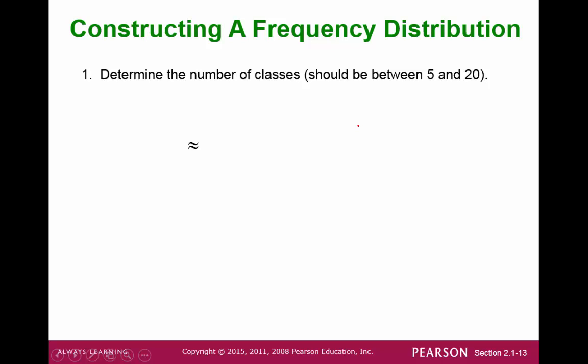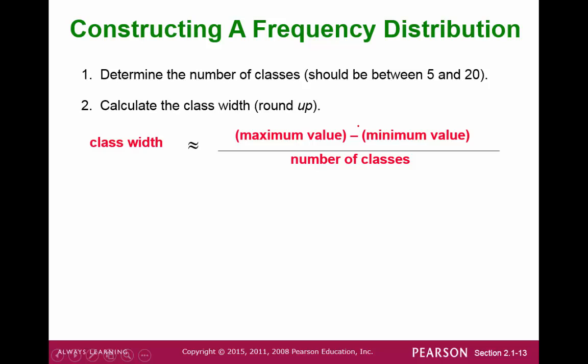Once we've figured out the number of classes we want, we can calculate the class width. We calculate the class width by finding the range and dividing by the number of classes that we decided on. And the class width should be a whole number, so we would round up.